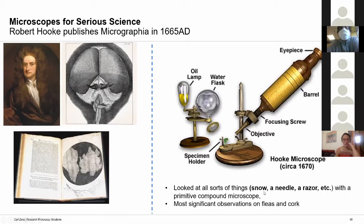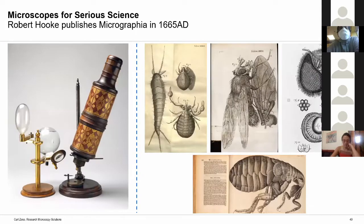Robert Hooke looked at all sorts of things — snow, needle, razor — and his most significant observations were of fleas and cork. He looked at a thin section of cork to discover and name what we now know as biological cells. Some more remarkable images appear in his very famous book, Micrographia.